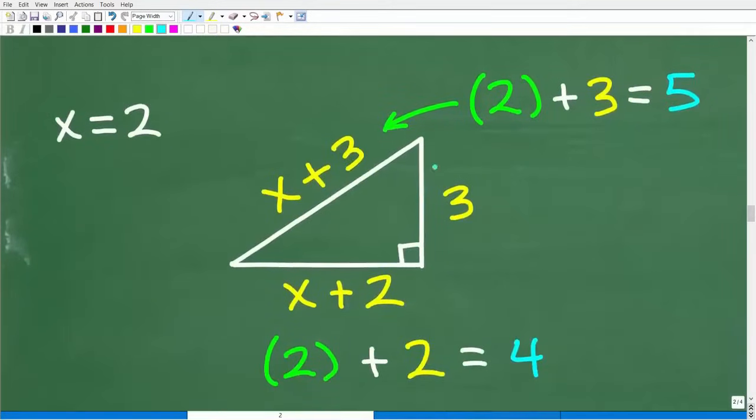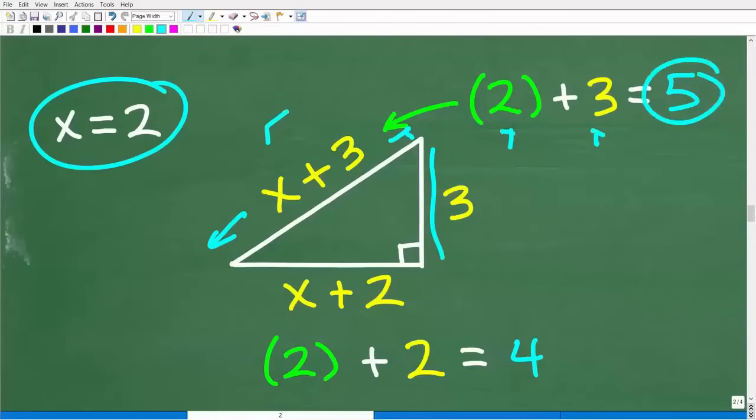Let's go ahead and use this value now because we're not done. Let's use what we now know, X is equal to 2, to figure out the actual answer. Here is our right triangle. This is 3. If X is equal to 2, what's going to be this side right here? It's going to be x plus 3 or 2 plus 3, which is 5. And then this side right here would be 2 plus 2, which would be 4.